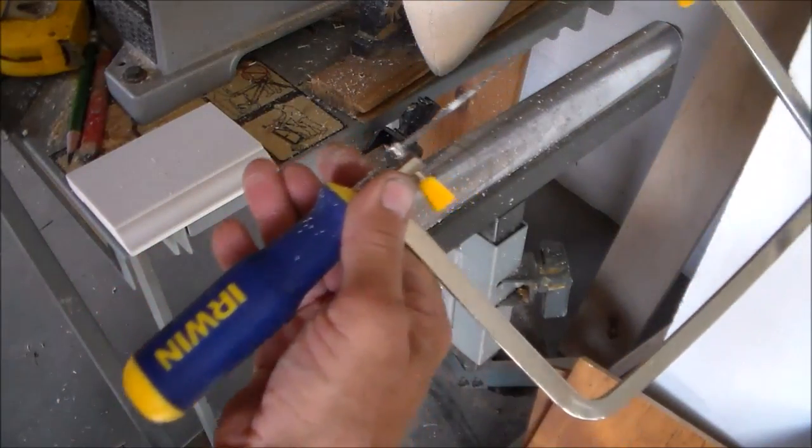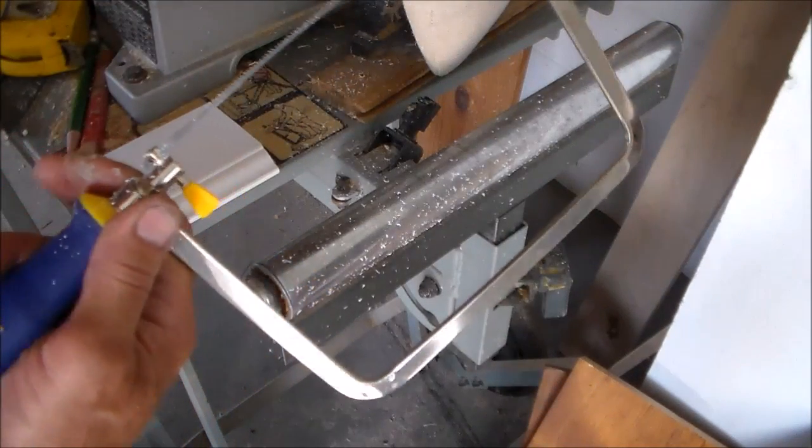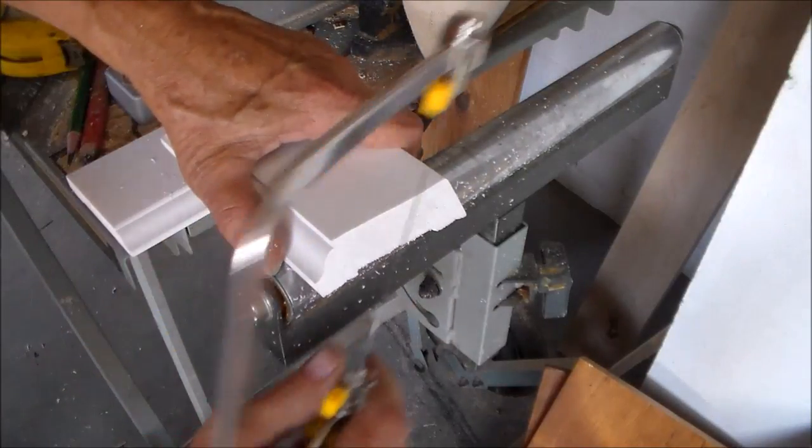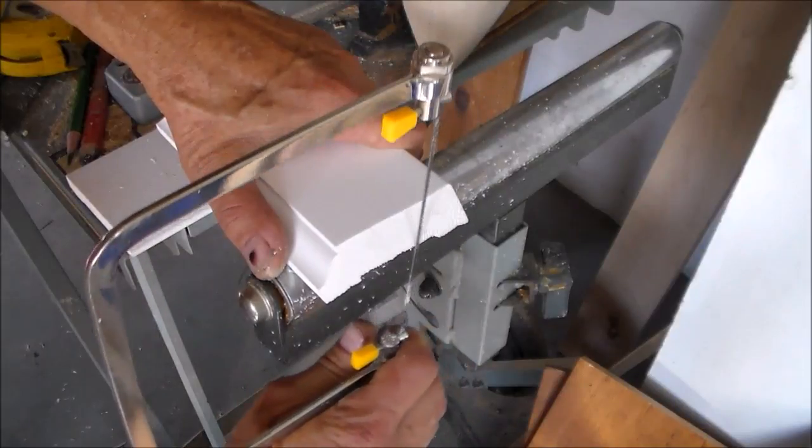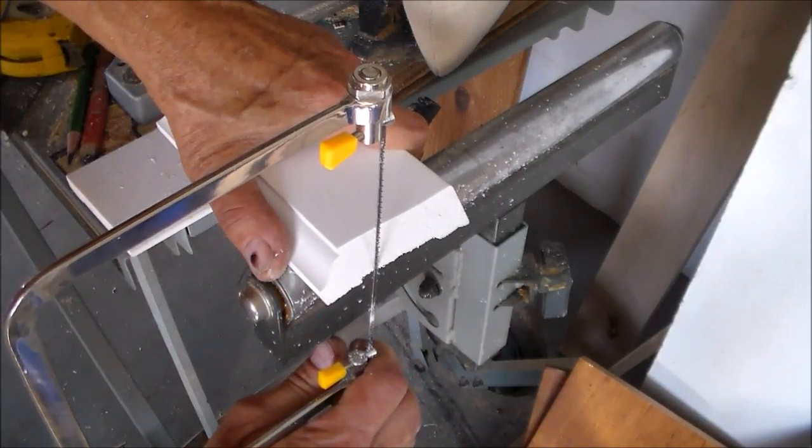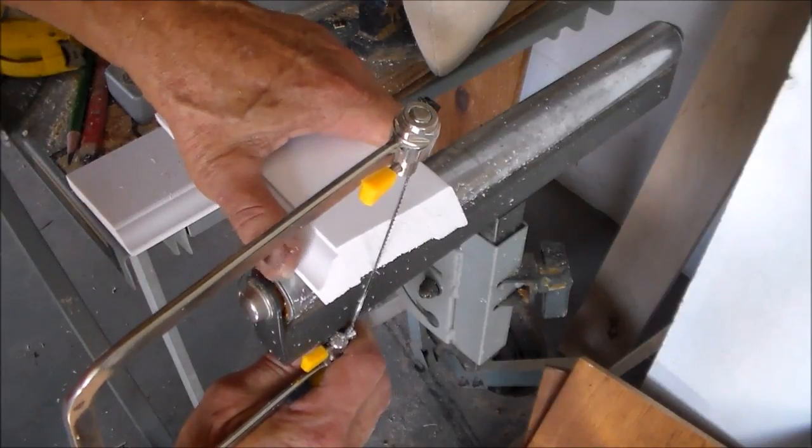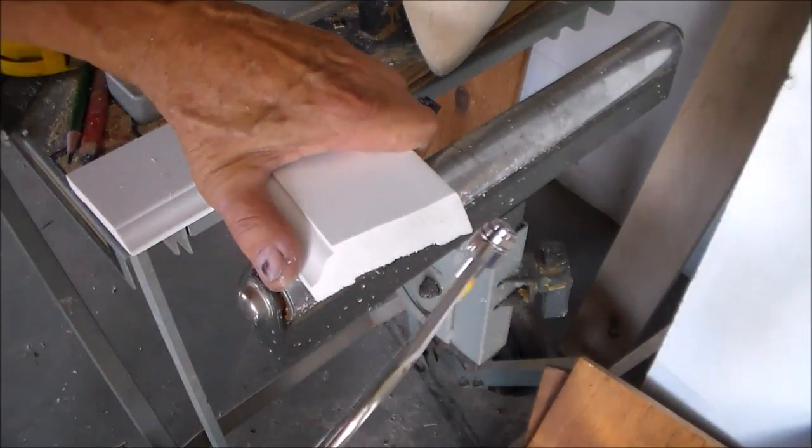Now you want to take a coping saw, and this is relatively a cheap saw, it costs about $10. And what you're going to do is cut away this material. And rather than be perfectly perpendicular, I like to tilt inward just slightly to make this top edge, the edge that will be in contact.